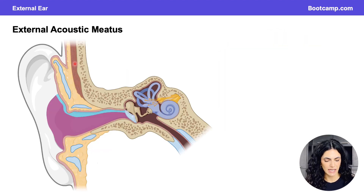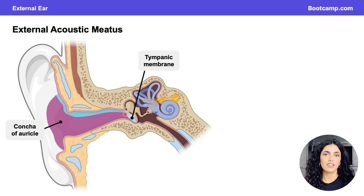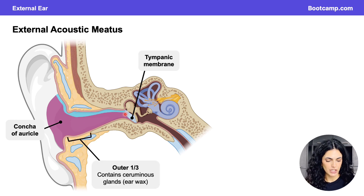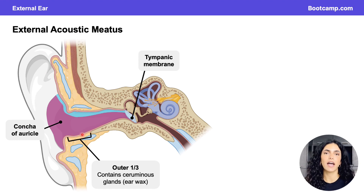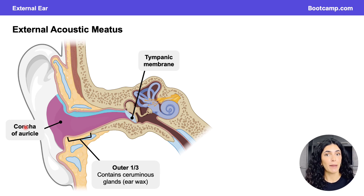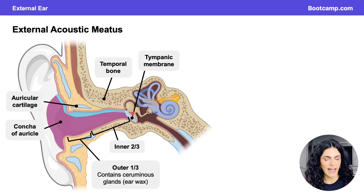Now let's move on to the external acoustic meatus. The concha within the auricle feeds sound waves into the external acoustic meatus, which ends at the tympanic membrane. The external acoustic meatus is divided into two regions: the outer third, composed mostly of auricular cartilage and adipose tissue, contains ceruminous glands — modified apocrine sweat glands mixed with sebaceous glands — responsible for producing earwax, which traps bacteria and protects the ear canal. The inner two thirds are housed within the temporal bone, ending at the tympanic membrane.